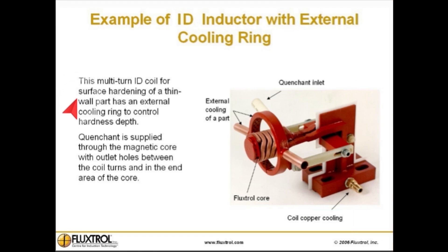Example of an ID inductor with an external cooling ring: this multi-turn ID coil for surface hardening of thin-wall parts has an external cooling ring to control hardness depth. Quenchant is supplied through the magnetic core with outlet holes between the coil turns and in the end area of the coil.